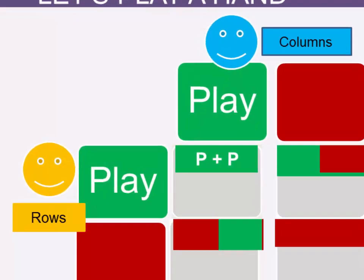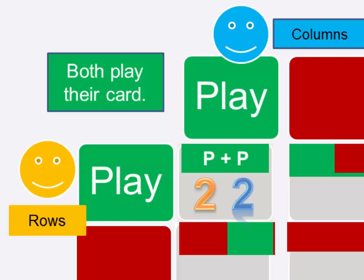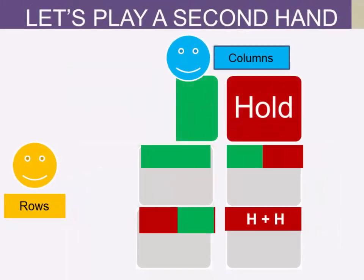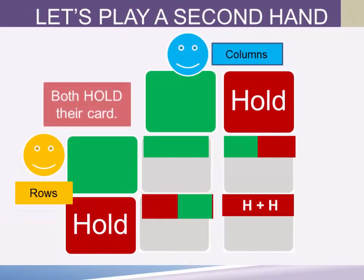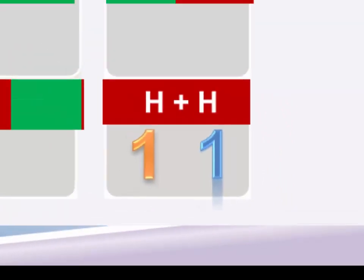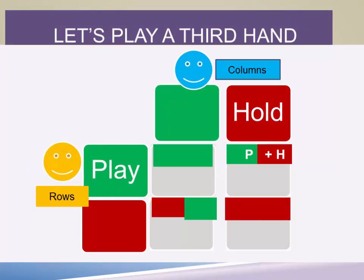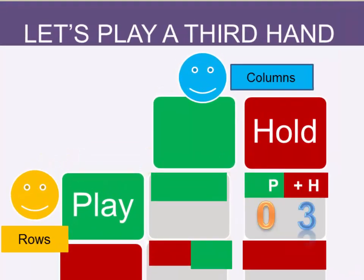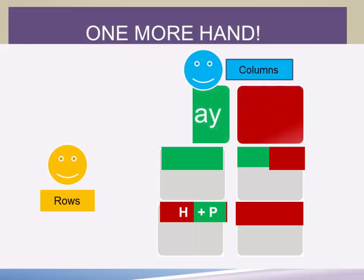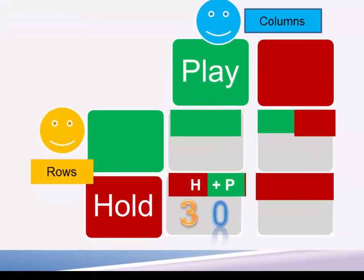The first hand is where orange plays and blue plays — they both play their card, and based on our payoff matrix, they each get two points. In the second hand, they both choose to hold the card, and when they do that, they each get one point. A third combination would be that orange chooses play and blue chooses hold, in which case orange gets zero points and blue gets three — which isn't good for orange. And the reverse is when blue plays and orange chooses to hold, in which case orange gets three points and blue gets zero — which isn't so good for blue, but is the best outcome for orange.